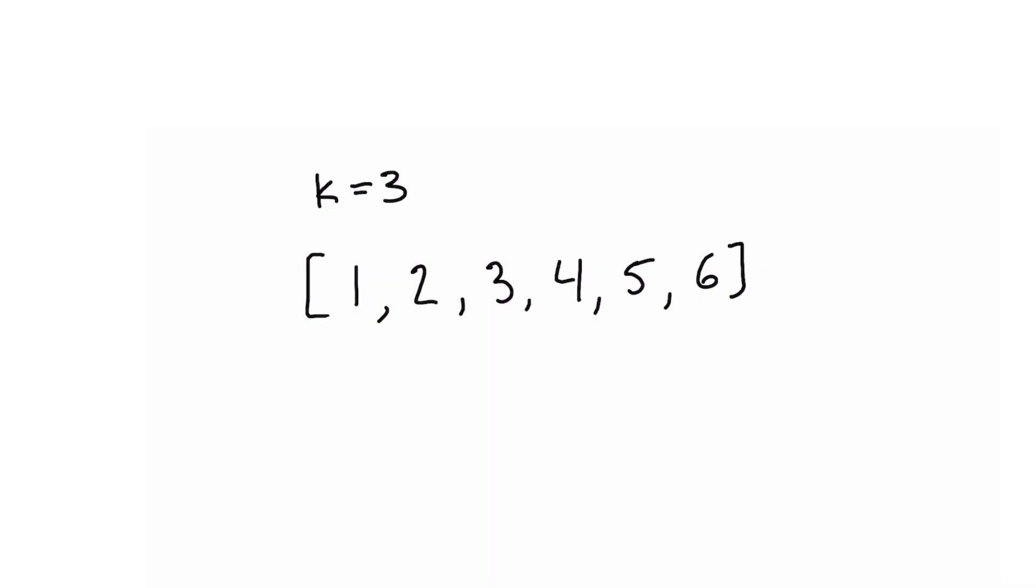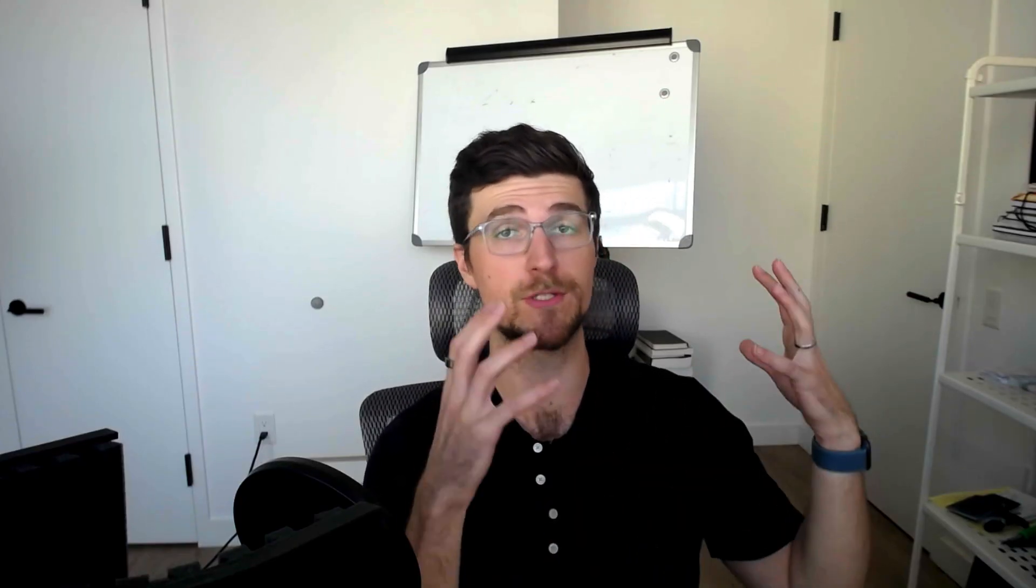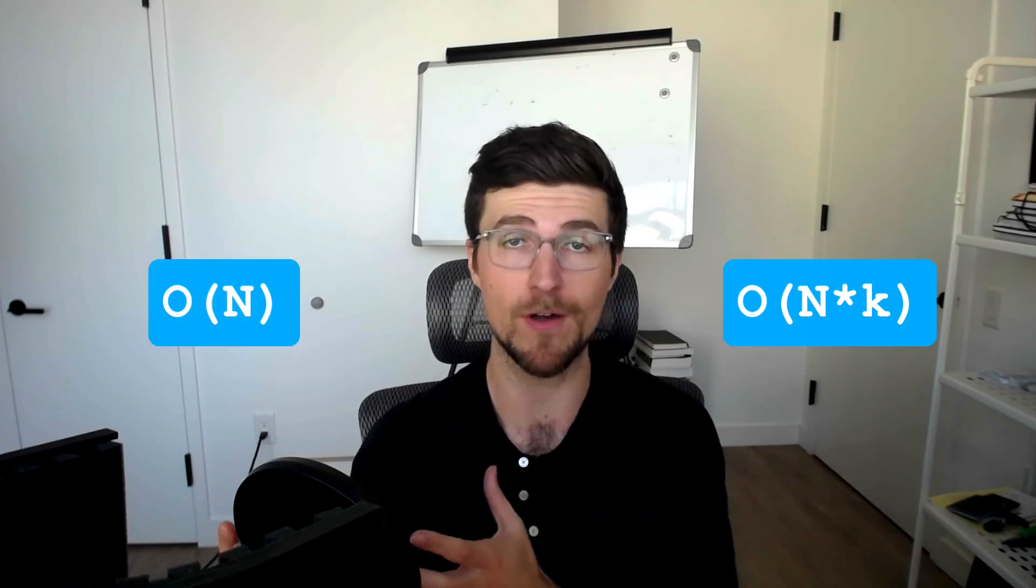So you write some code that iterates over the first k elements, in this case 3, and you get the sum which is 6. Then you iterate over the next three elements and then the next three elements and you sum each of those up to get your result. But then you still end up failing your interview because your solution was O of n times k instead of O of n.